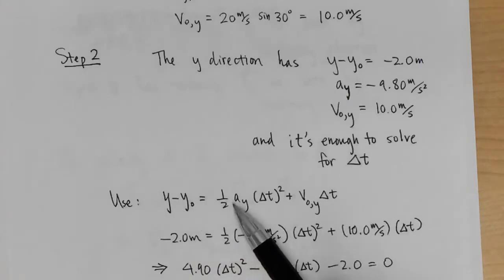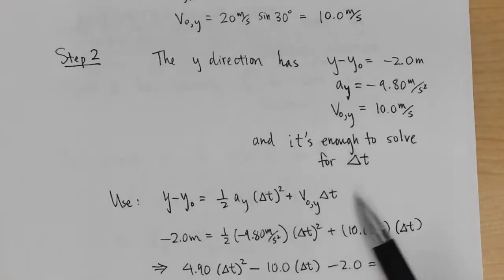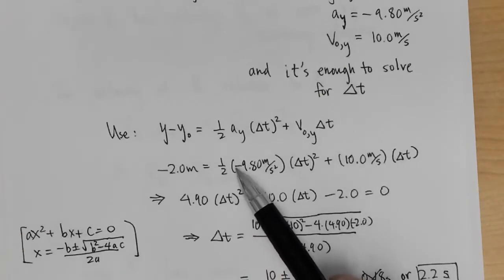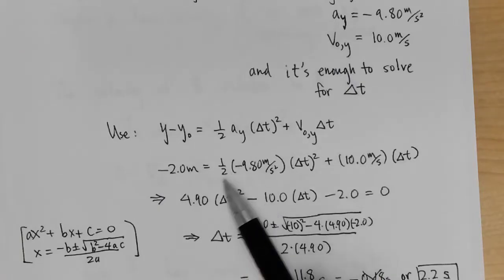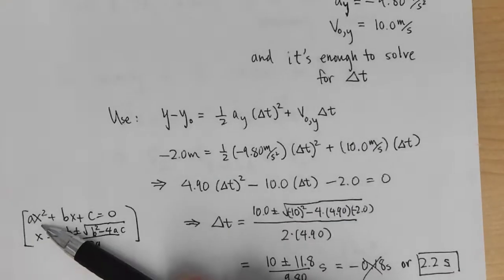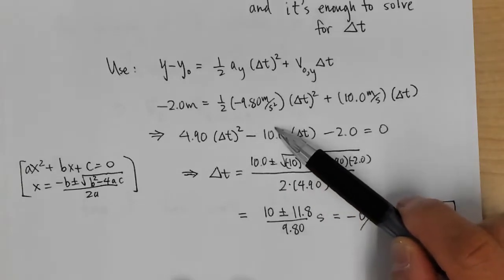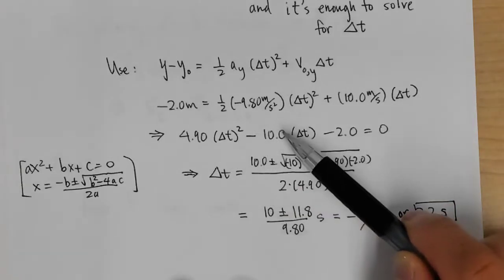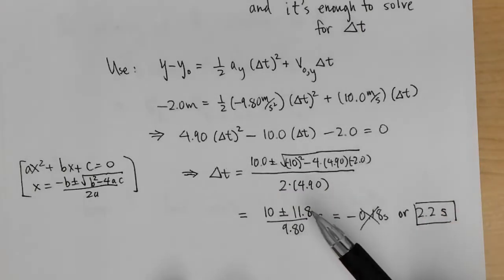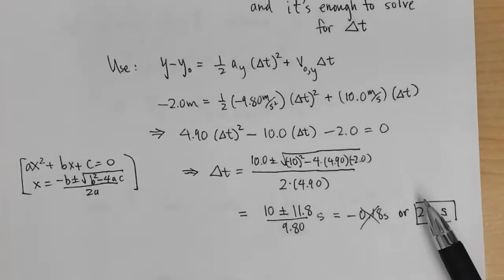Using y − y₀ = ½ay·Δt² + v₀y·Δt and substituting the values, we rearrange to get 4.9Δt² − 10Δt − 2 = 0. Applying the quadratic formula, Δt = (10 ± √(100 − 4·4.9·(−2))) / (2·4.9) = (10 ± 11.8) / 9.8. Taking the physical (positive) solution gives Δt = 2.2 seconds.